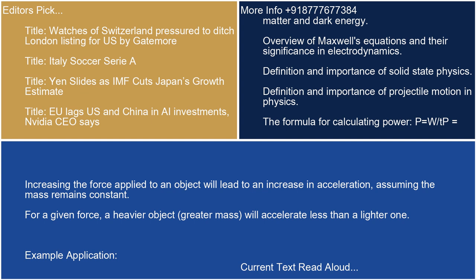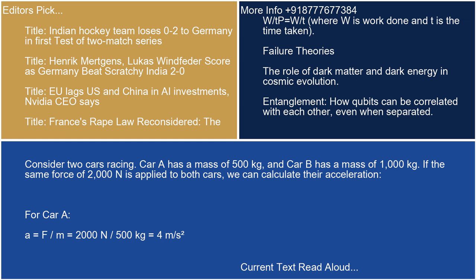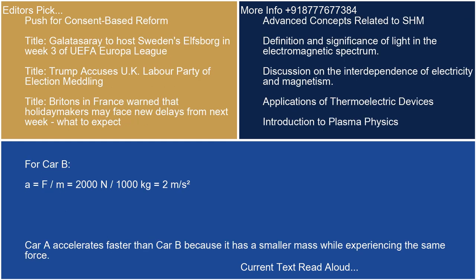Example application: Consider two cars racing. Car A has a mass of 500 kg, and car B has a mass of 1,000 kg. If the same force of 2,000 N is applied to both, we can calculate their accelerations. For car A: A = F/M = 2,000 N / 500 kg = 4 m/s². For car B: A = F/M = 2,000 N / 1,000 kg = 2 m/s². Car A accelerates faster than car B because it has a smaller mass while experiencing the same force.